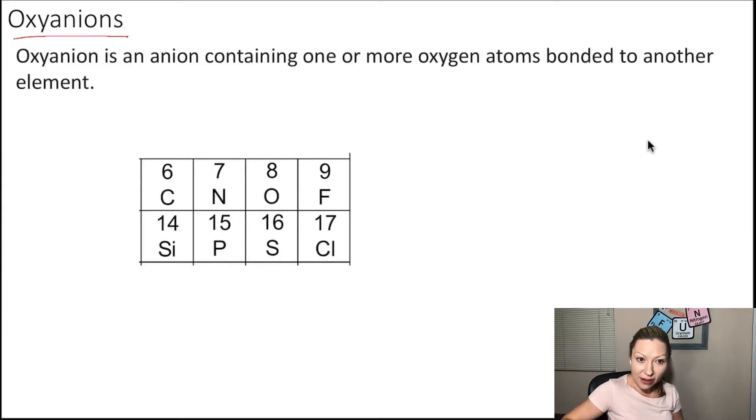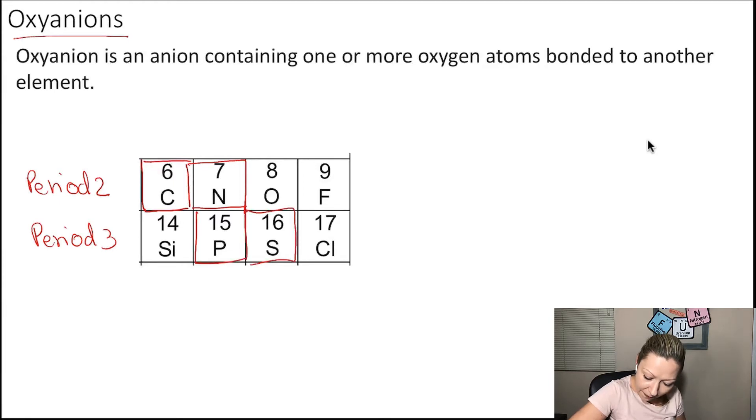I have here a cutout of the periodic table. This is from period two, this is from period three. And I am interested in carbon, nitrogen, phosphorus, sulfur, and chlorine. So all these elements are going to have oxyanions.